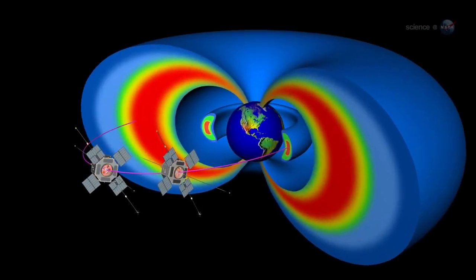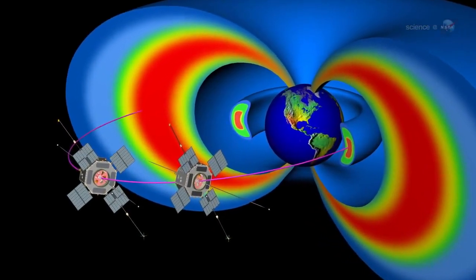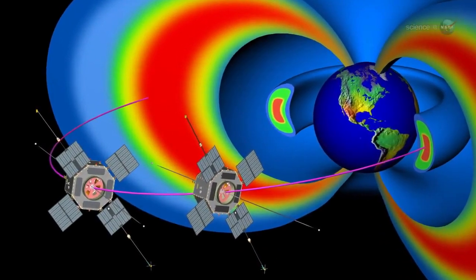Chorus emissions are front and center for the storm probe mission, says Kletzing. They are thought to be one of the most important waves for energizing the electrons that make up the outer radiation belt.